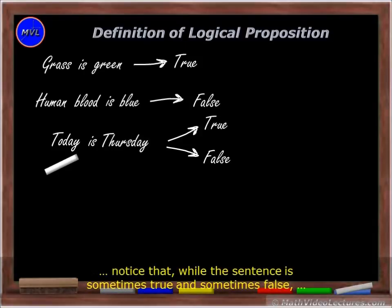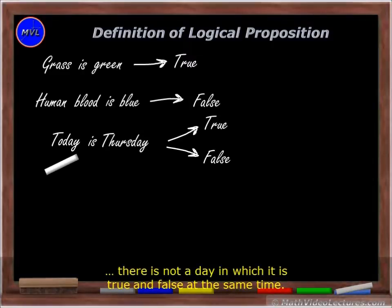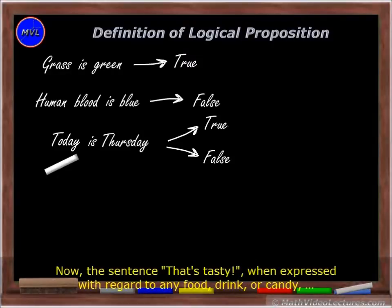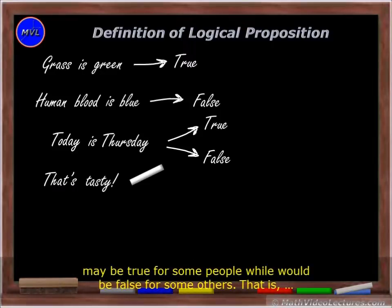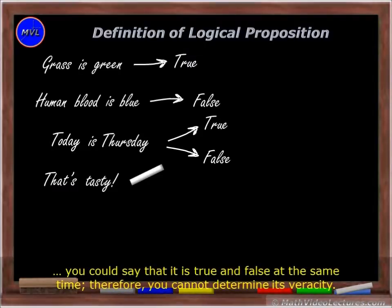Notice that, while the sentence is sometimes true and sometimes false, there is not a day in which it is true and false at the same time. Now, the sentence 'that's tasty,' when expressed with regard to any food, drink, or candy, may be true for some people, while it would be false for some others. That is, you could say that it is true and false at the same time. Therefore, you cannot determine its veracity.